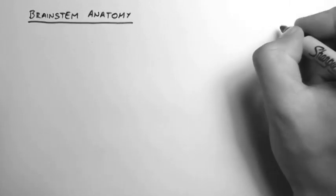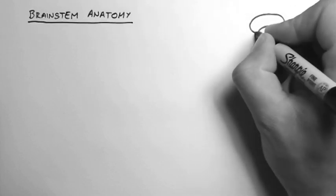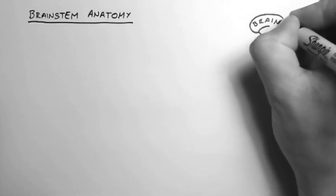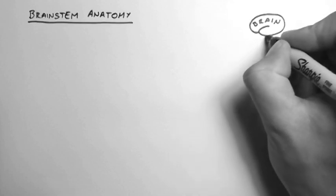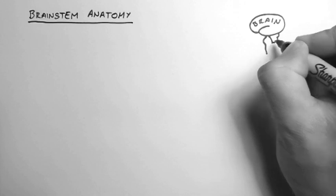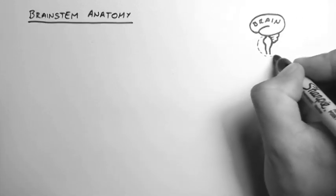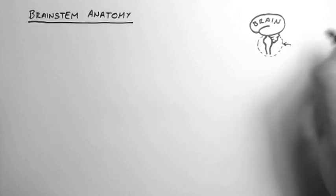So this is looking at the brain from the side. So if this is a brain, then the brain stem hangs down from the brain like this. This circled section is the brain stem.